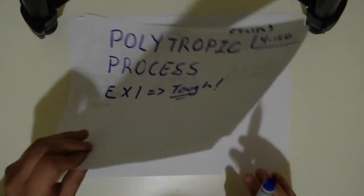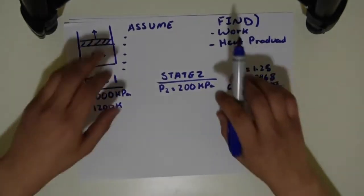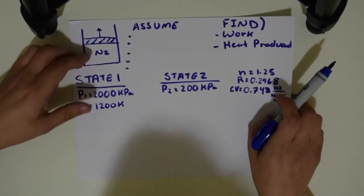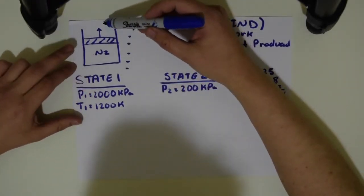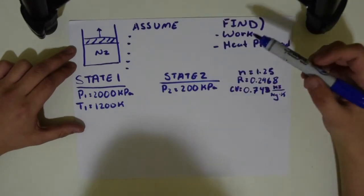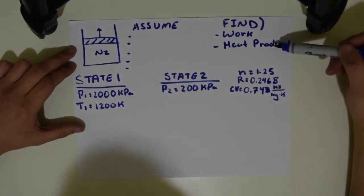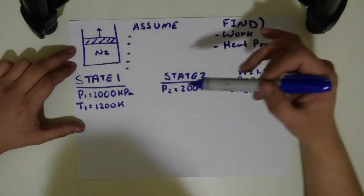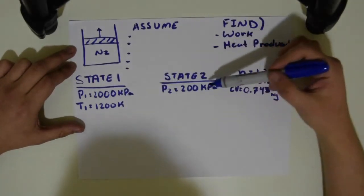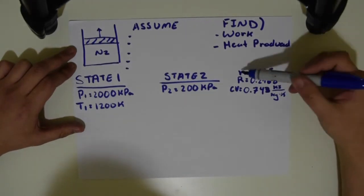So in this problem we have basically some nitrogen in a piston-cylinder device and it's expanding. For this problem they want us to find the work and the heat produced. For state 1 we have a pressure and temperature, for state 2 we have a pressure of 200 kPa, and they give us this N value.